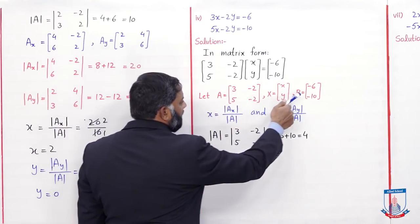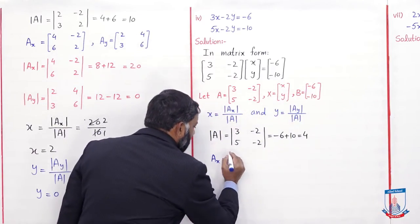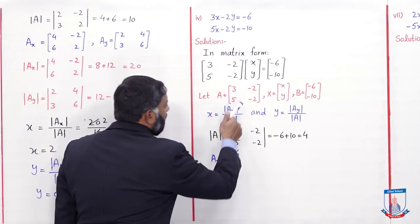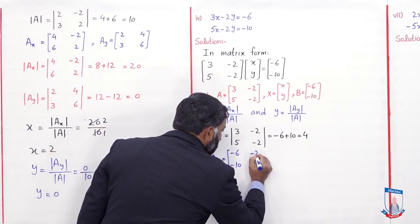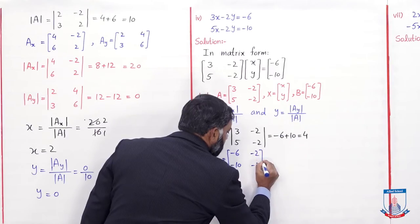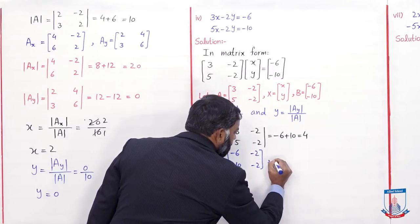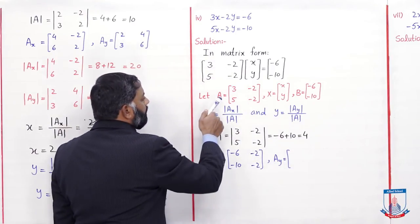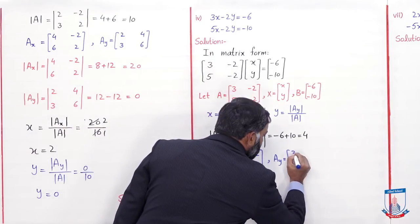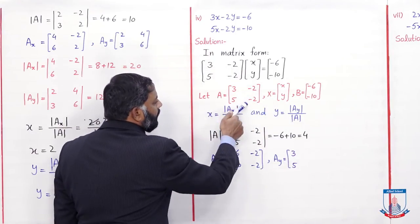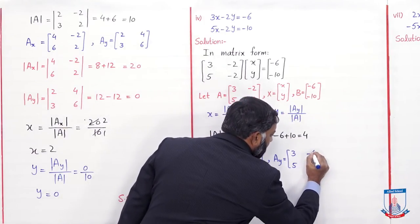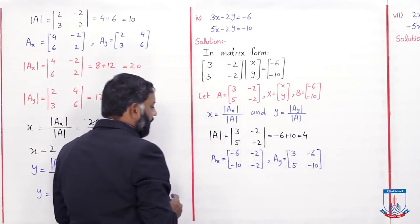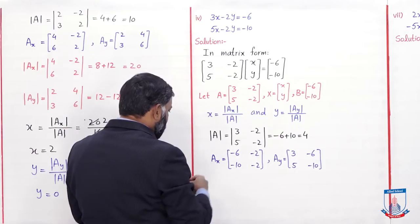Ax matrix mein A matrix ke first column ki jagah B matrix ka column aayega: minus 6, minus 10; aur second column as it is: minus 2, minus 2. Phir Ay ka matrix likhenge: Ay ke matrix mein A matrix ka first column as it is aayega — 3, 5; aur second column ki jagah B matrix wala column likhenge: minus 6, minus 10. Ab Ax aur Ay ka determinant find kar lenge.